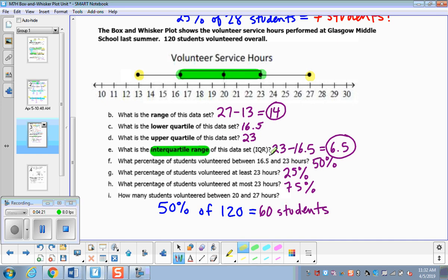How many students volunteered between 16.5 and 23? So what percent is represented in that box? 50%. What percent of students volunteered at least 23? So 23 or more, that's going to be that 25% of the data. What percentage of the students volunteered at most 23? So that's going to be this group and smaller this way. So that's going to be these three quartiles, or 75%.